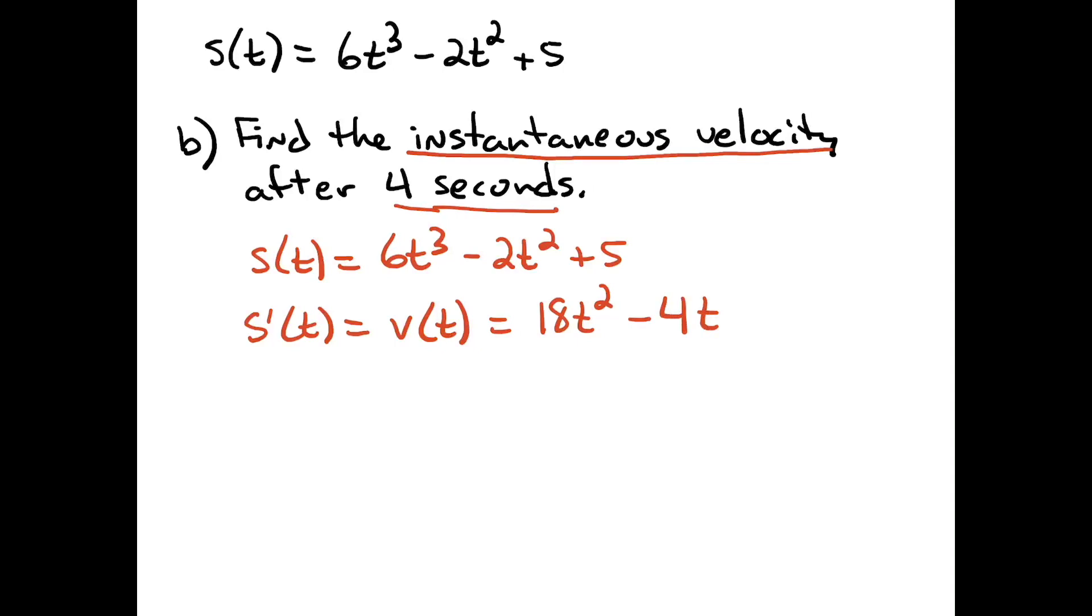Now that I have the velocity function, I want it after four seconds. So then I can calculate v of 4. And that's just a matter of plugging it in here. So I'm going to have 18 times a 4 squared minus a 4 times 4. That's going to be a 288 minus a 16. That's going to give me 272. And again, instantaneous velocity, that's just going to be feet per second because of the way the story problem was originally presented.